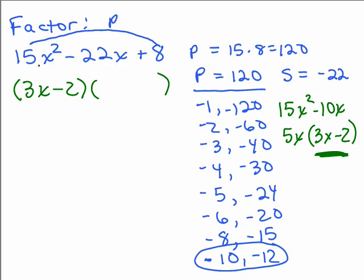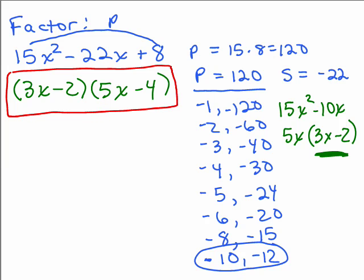3x times what will give you 15x squared, 5x, negative 2 times what will give me positive 8, negative 4, let's check it, does that give me the correct one? And, hmm, look at that, I've got negative 12x, negative 10x, that does give me the negative 22x, cool.